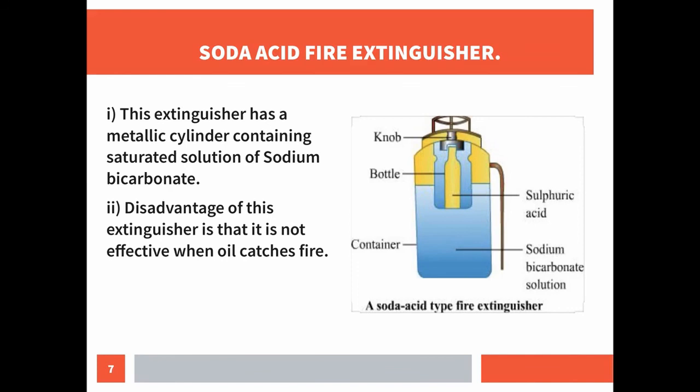However, the disadvantage of this extinguisher is that it is not effective when oil catches fire. Also, if the clothes of a person working in the kitchen catch fire, the person should immediately be covered with a blanket. When the burning clothes are covered with a blanket, the supply of air is cut off and the burning stops.